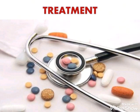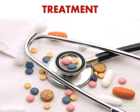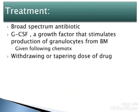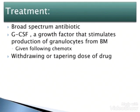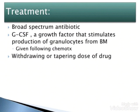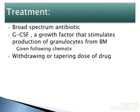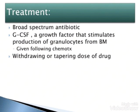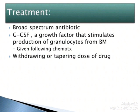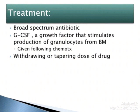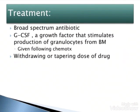Now we will see the treatment. There is no single main treatment; we just have to improve the neutrophil count. First, we go for broad-spectrum antibiotics to reduce infection and help the patient regain immunity. Then we use G-CSF, a growth factor that stimulates production of granulocytes from the bone marrow, given following chemotherapy. We also consider withdrawing or tapering the dose of offending drugs. According to the patient's symptoms, we give symptomatic treatment to reduce pain, fever, and cough as needed.